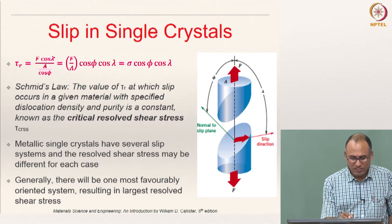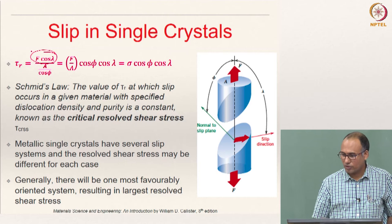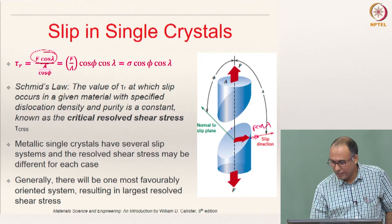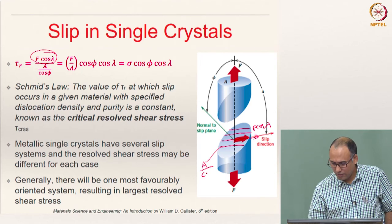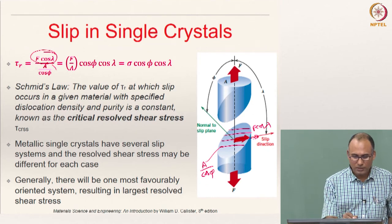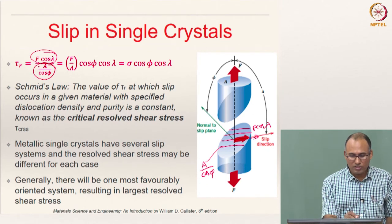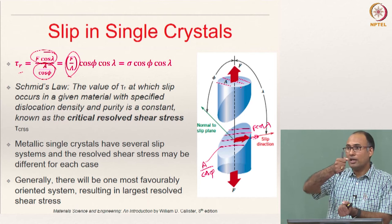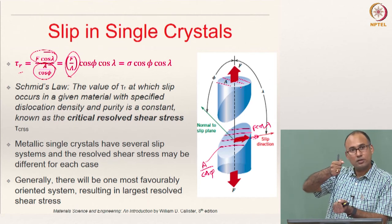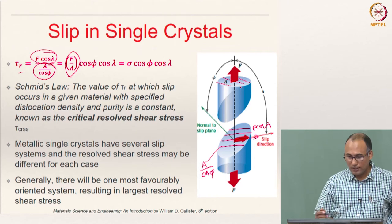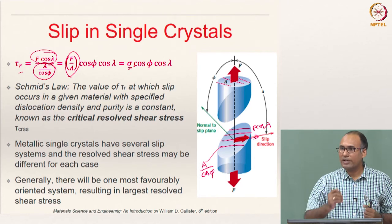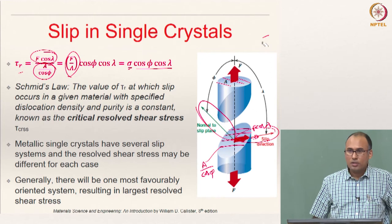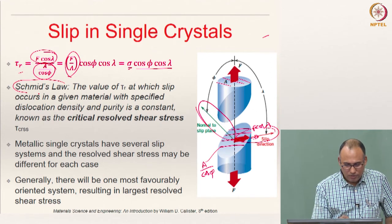The resolved force acting along the slip direction is F cos lambda, and the area of the slip plane is A divided by cos phi. So the resolved shear stress equals F cos lambda divided by (A / cos phi), which simplifies to (F/A) × cos phi × cos lambda. Denoting F/A as sigma, the applied stress, we get tau_r = sigma × cos phi × cos lambda. This is what we define as Schmid's law.